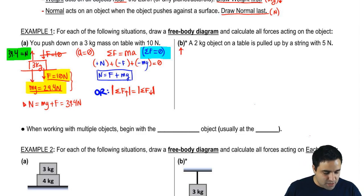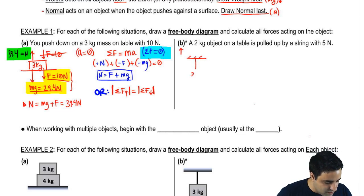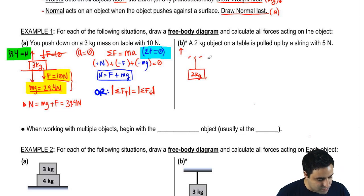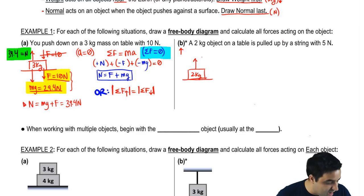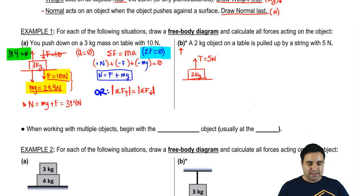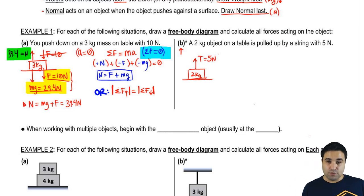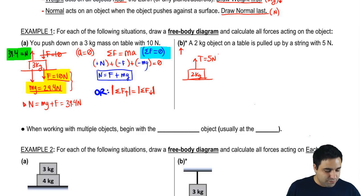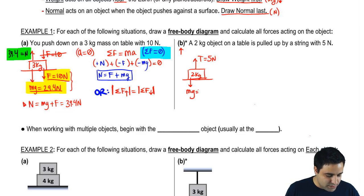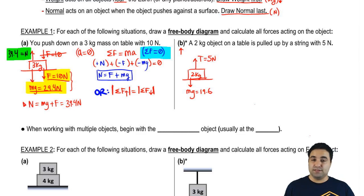I want you to try this out — pause the video. I have a two kilogram object on a table being pulled up with a force of five, or you can call this a tension. Draw a free body diagram with all the forces. The free body diagram would have mg down. mg is 2 times 9.8, so this is 19.6. That's the first force I draw.